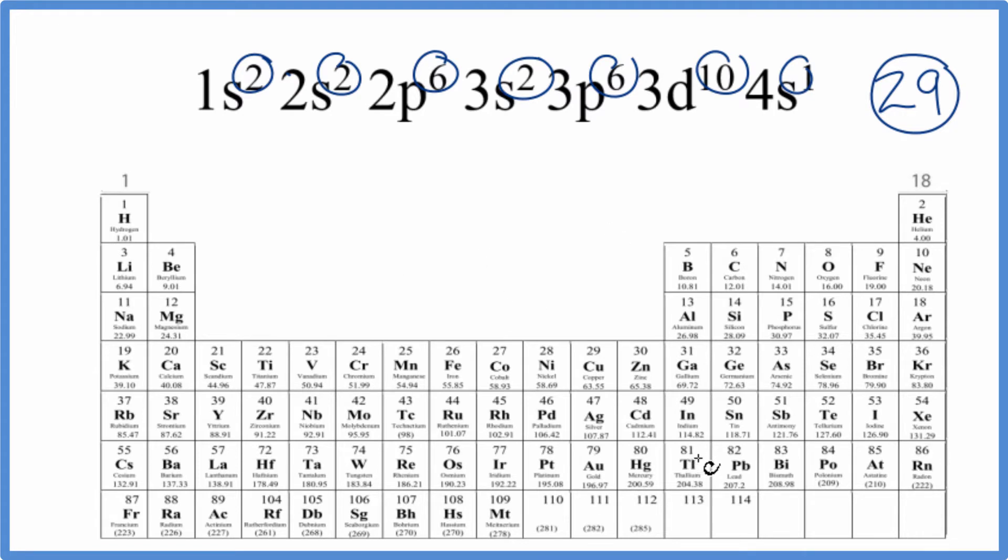Since all of the elements on the periodic table are neutral, that means they don't have a negative or positive sign after them, we know that the atomic number, the number of protons, will equal the number of electrons. So we just find atomic number 29 here. That's copper. So this is the element that represents this electron configuration ending in 3d¹⁰ 4s¹.